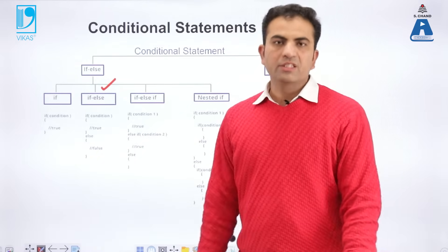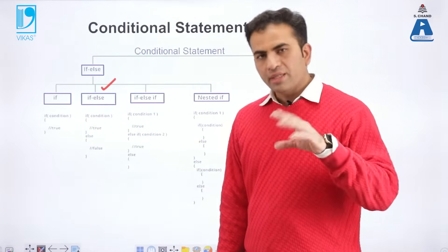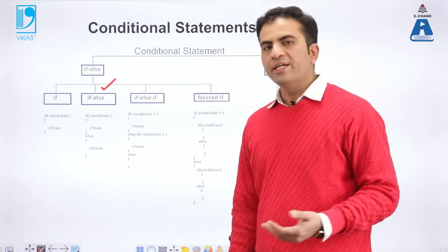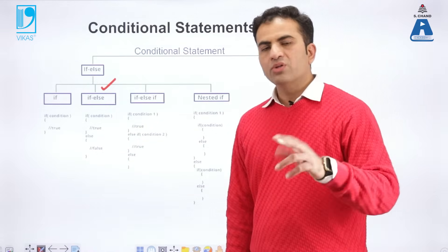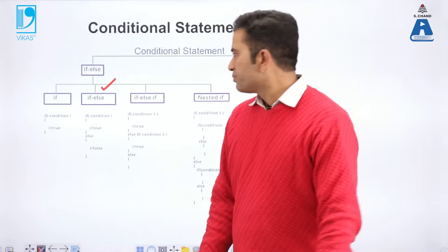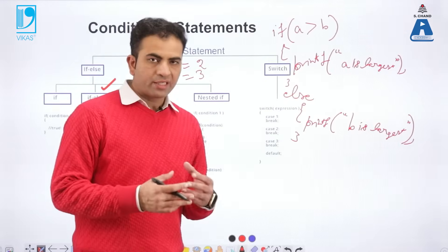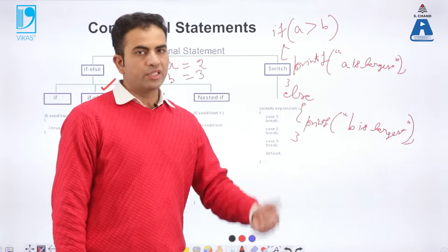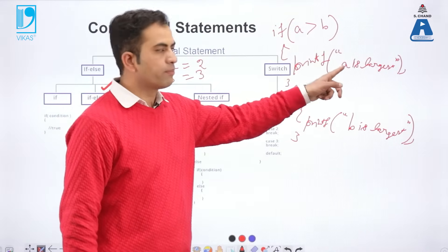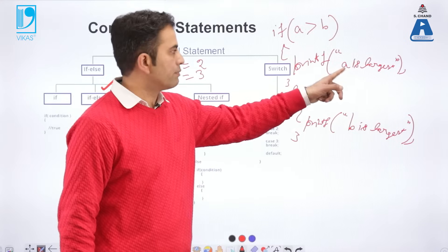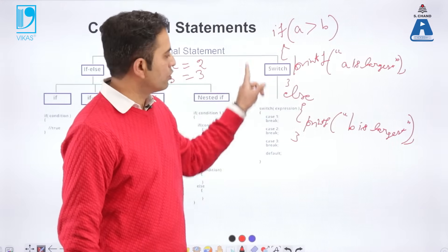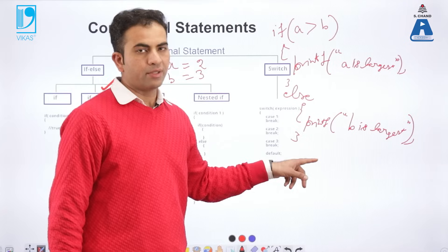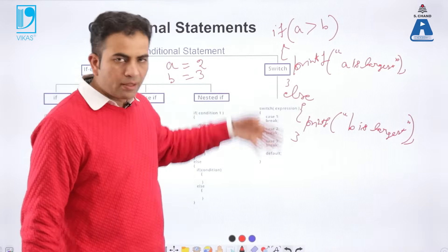Now we will focus on the if-else statement when two conditions are provided. For example, to find out which of two numbers is greater: if the condition is true it prints one statement; if the condition is false, control moves to the else part and prints the other statement. This is a simple example of how to use the if-else statement.